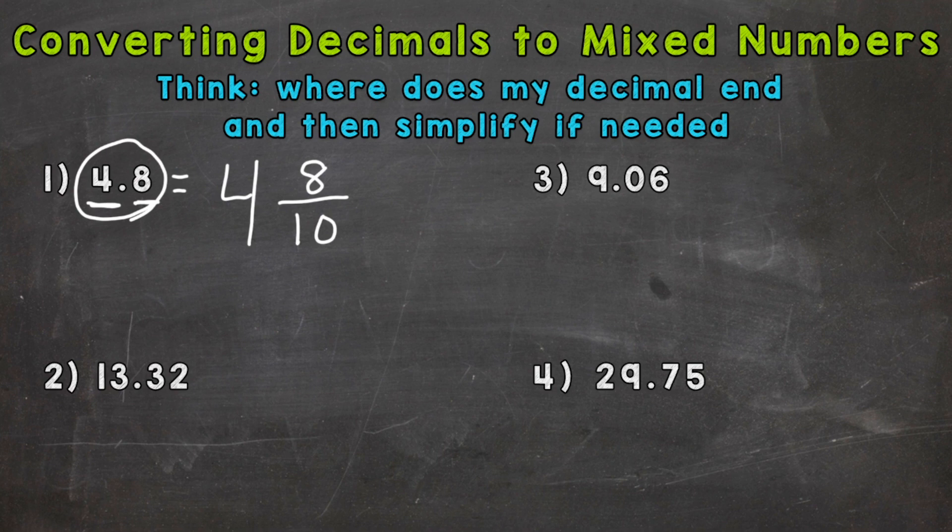Now once you get to the fractional part of the mixed number you can simplify if it applies. And here we have a common factor of two so we can divide our eight and ten by two and we get to four and four fifths.